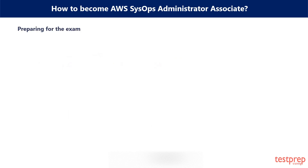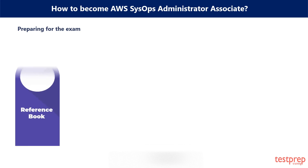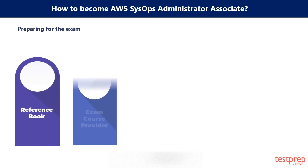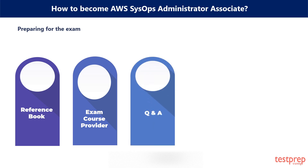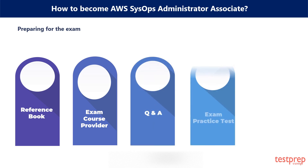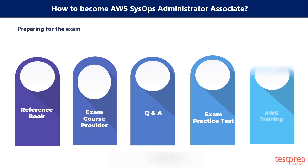Preparing for the Exam. You can prepare for the AWS Certified SysOps Administrator Exam using free resources available both online and offline. This will help you in understanding the topics better, with expert assistance always there to solve your queries. Resources include: first, reference books; second, exam course providers; third, Q and A; fourth, exam practice tests; fifth, AWS Training.